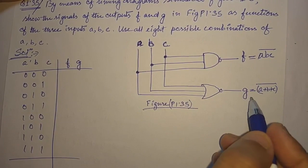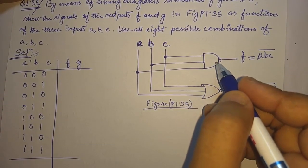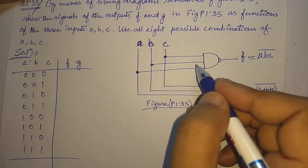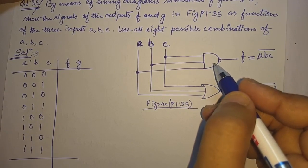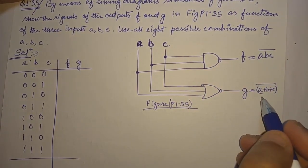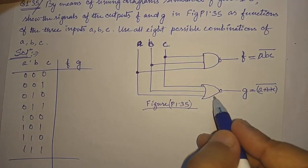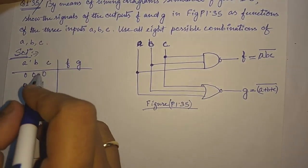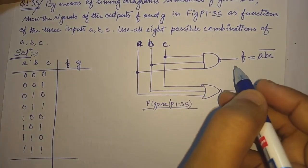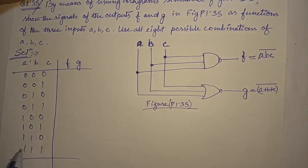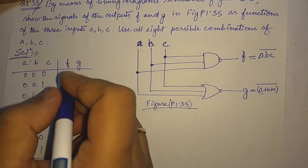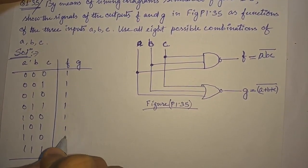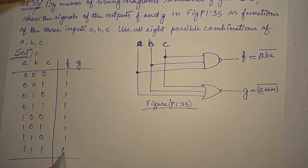In the case of a NAND gate, if any one of the inputs is 0, the output is 1 because it is inverted. So for all combinations that have at least one 0 input, the f output will be 1. All seven such combinations give f = 1. Only when all inputs are 1, the output is 0.